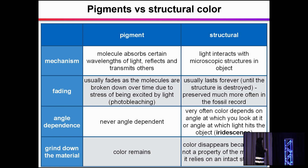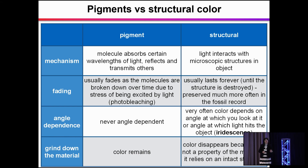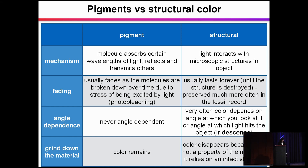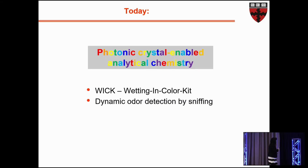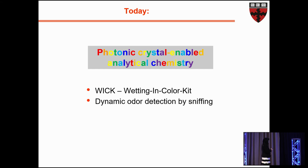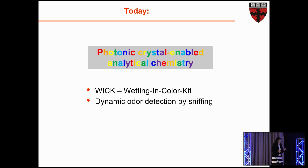Structural color lasts forever — or until you break the structure responsible for the specific wavelengths of light interaction. Angle dependence is another key difference: pigments are never angle dependent, but structural color gives you shine and iridescence, and these angle-dependent features are very important for biological systems. If you grind down material, pigment color remains, but unfortunately structural color is lost. Today I will talk about photonic crystal-enabled analytical chemistry, focused on two topics: an approach we call WIC — wetting in color kit — and dynamic odor detection by sniffing.